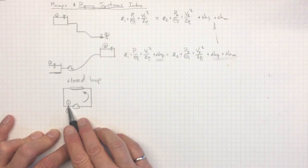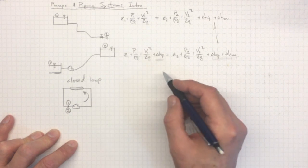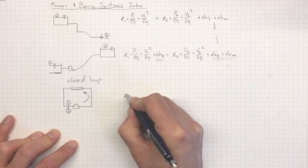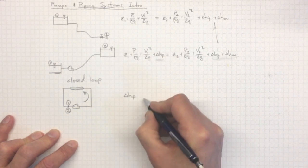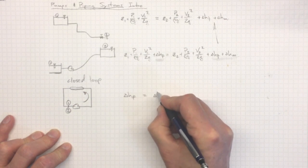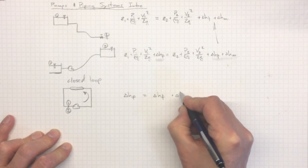So instead, we don't have these terms at all. We'll just have that the increase in head across the pump must be equal to the decrease in head due to friction and minor losses as we go around the loop.